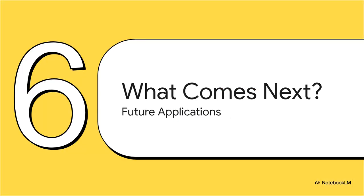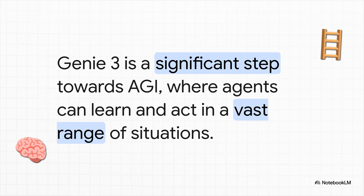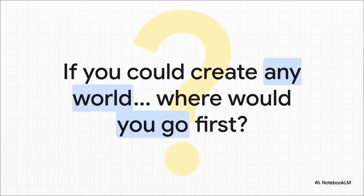So where does a world-generating AI even go from here? The potential uses are pretty much endless. Think beyond just training other AIs — imagine virtual science labs for students that are perfectly safe, incredibly complex simulators for surgeons or pilots, or maybe even entirely new kinds of interactive art and entertainment that we can't even dream up today. But ultimately, this isn't just about making cool-looking stuff. Genie 3 is a huge milestone on that long road to artificial general intelligence. The ability to learn and adapt and act across a nearly infinite range of simulated worlds is a core piece of the AGI puzzle. For pretty much all of human history, our ability to explore new worlds has been limited by physics. With a tool like Genie, the only real limit is our own imagination. So the question is: where would you go first?